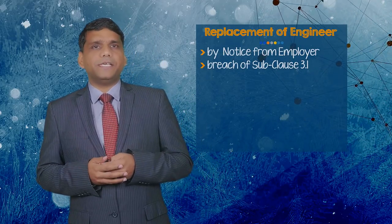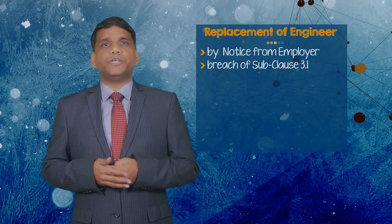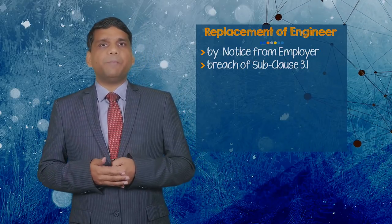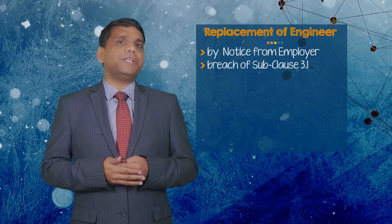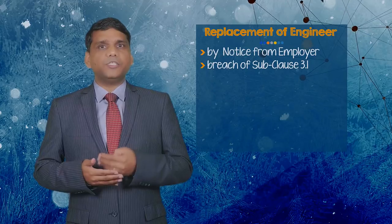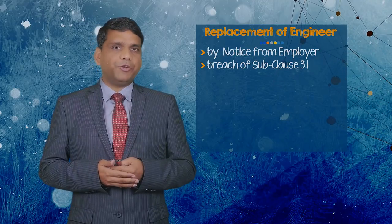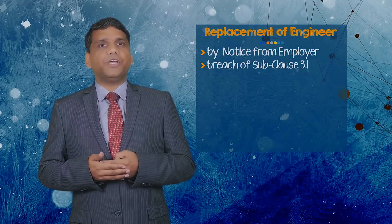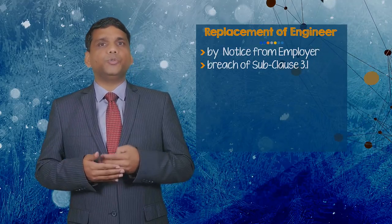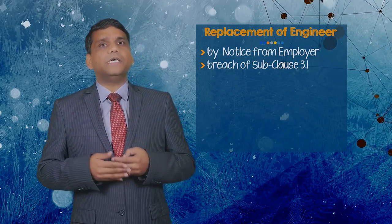Under sub-clause 3.6, the employer may replace the engineer by giving the contractor 42 days' notice before the intended date of replacement. The notice should comprise the name, address, and relevant experience of the intended replacement engineer. It is to be noted that this notice should comply with the requirements set out in sub-clause 1.3 of FIDIC — notices and communications must be in writing, sent to the correct address by an approved means, and copied to the engineer. However, the employer is not required to give reasons for the replacement.